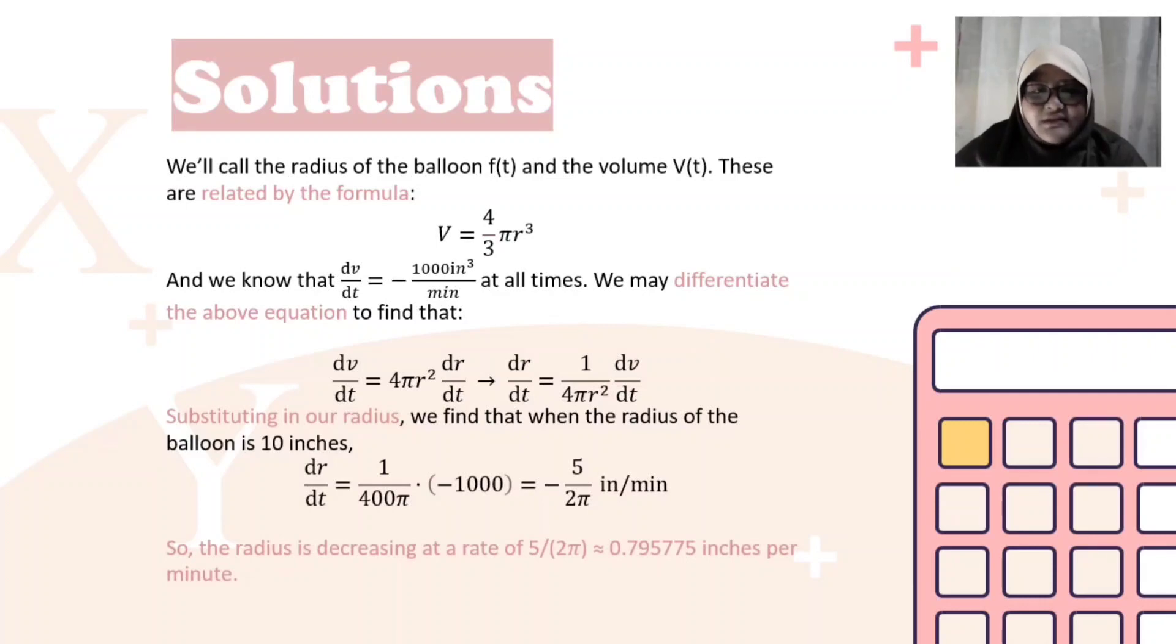dr/dt is equal to 1/(400π) times negative 1000, equal to negative 5/(2π) inch per minute. So, the radius is decreasing at a rate of 5/(2π).